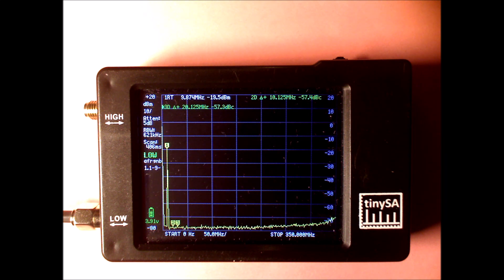To start with, I've taken a signal generator with a fairly clean signal at 10 MHz at a level of minus 20 dBm. And the TinySA is in its default settings, so nothing changed after switch on.